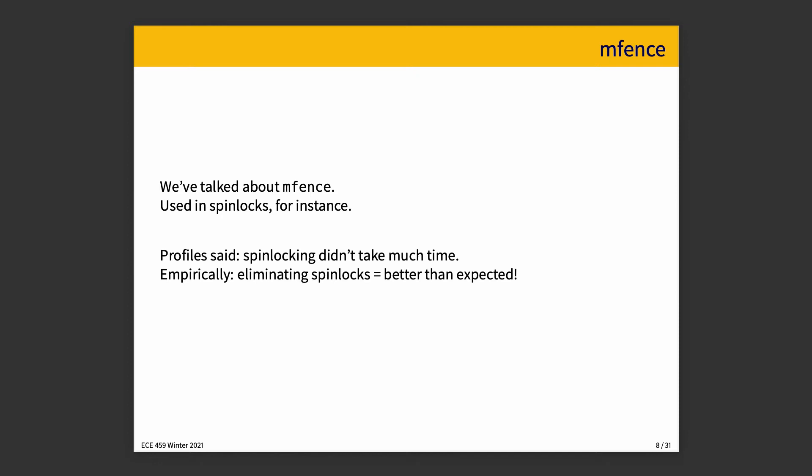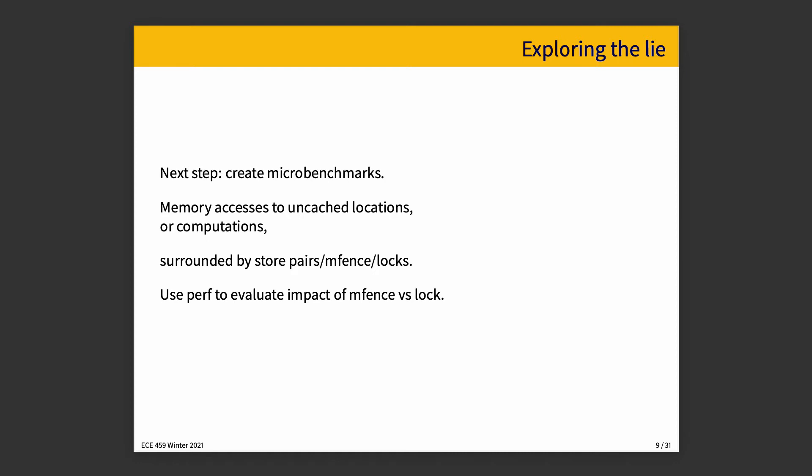The idea is about what the performance counters that are in the CPUs can tell you. We've talked about MFence, and MFence is used in several situations, ensuring memory consistency. If you look at MFence using your profiler, you may find that actually the spin lock doesn't take much time. But empirically, replacing the spin lock approach with a different approach seemed to be better than expected.